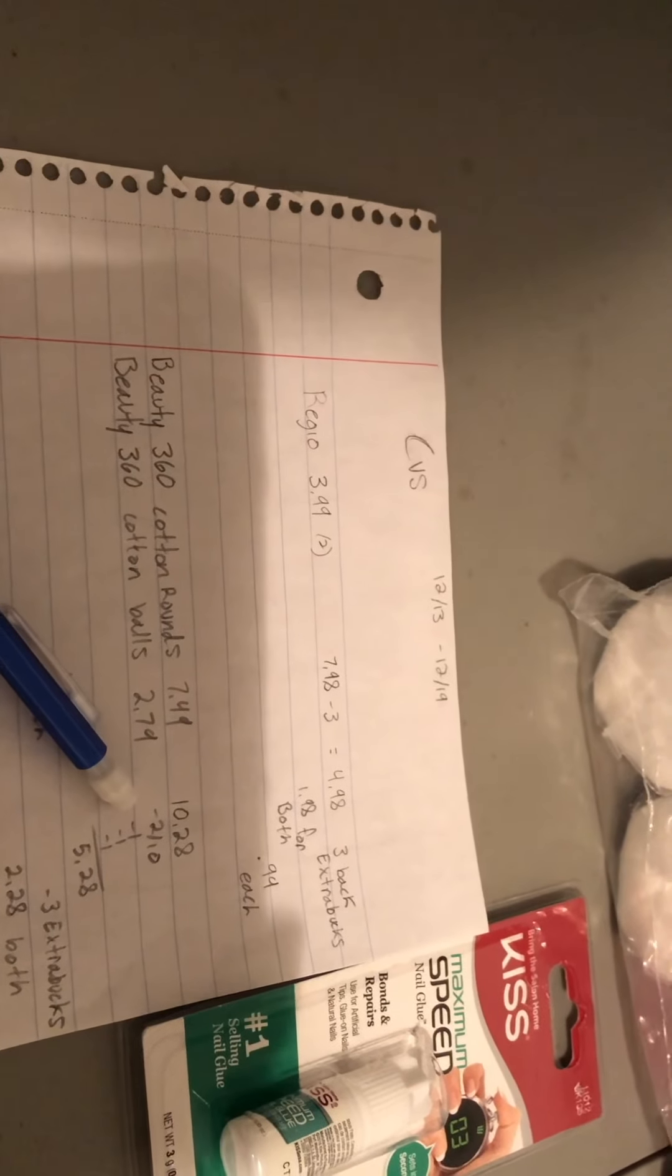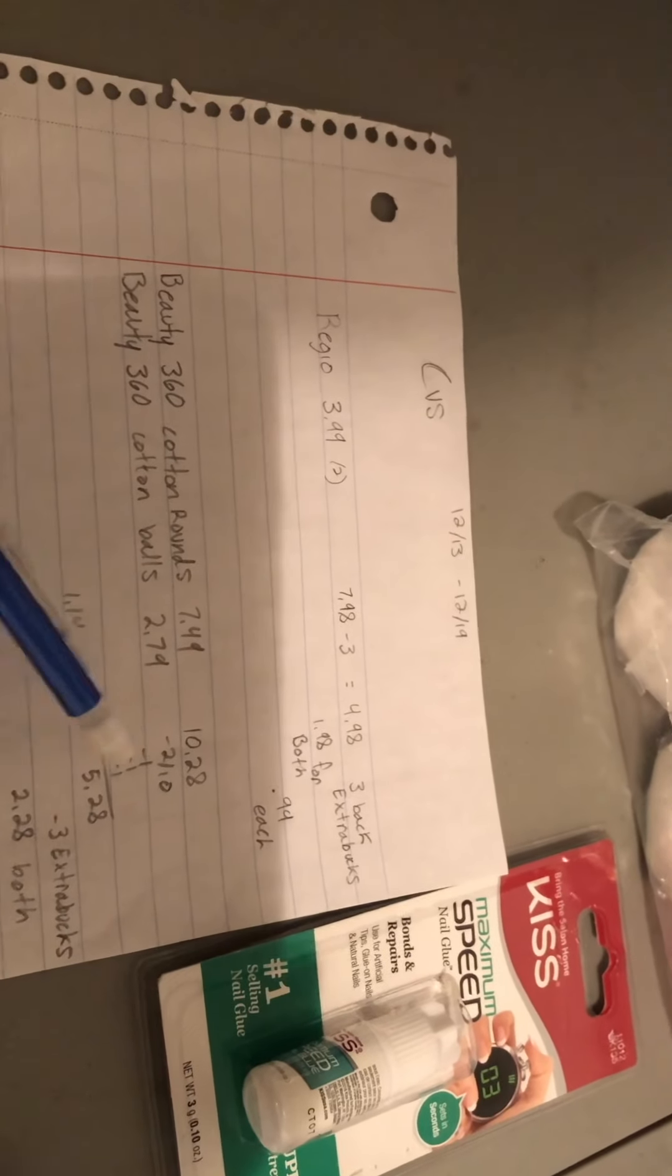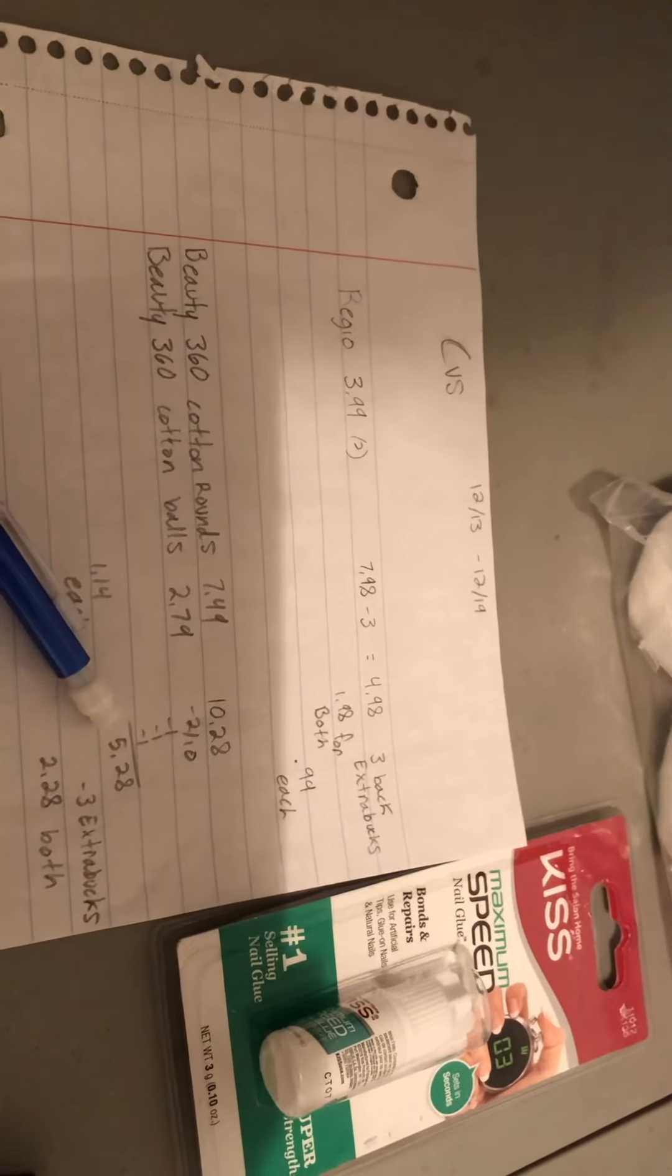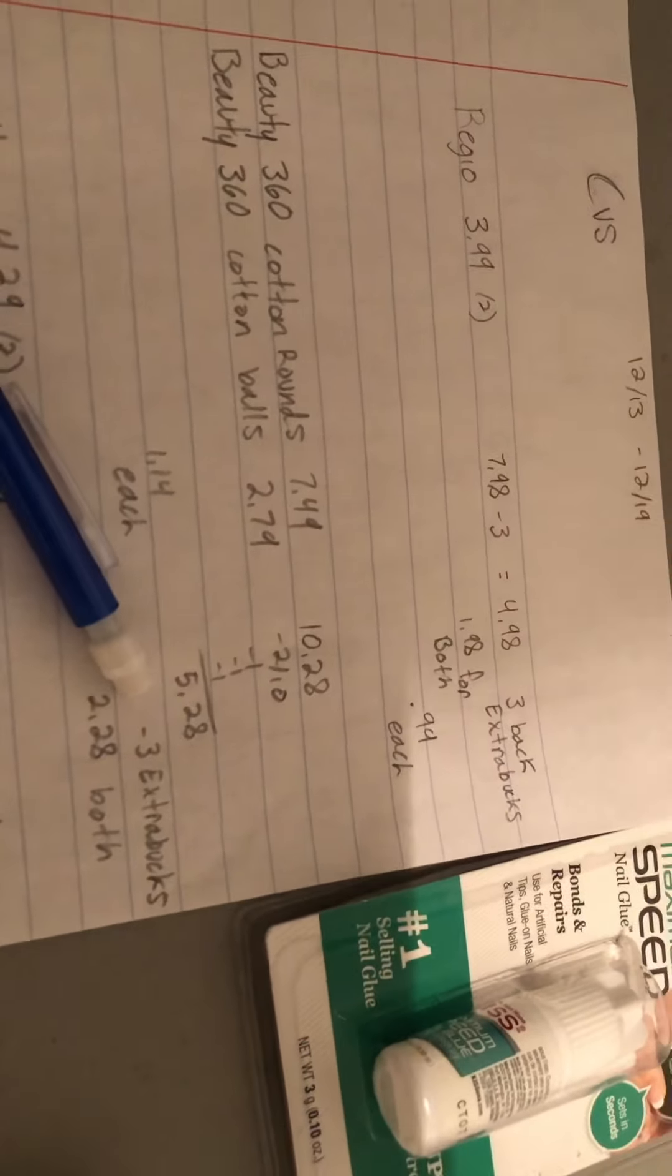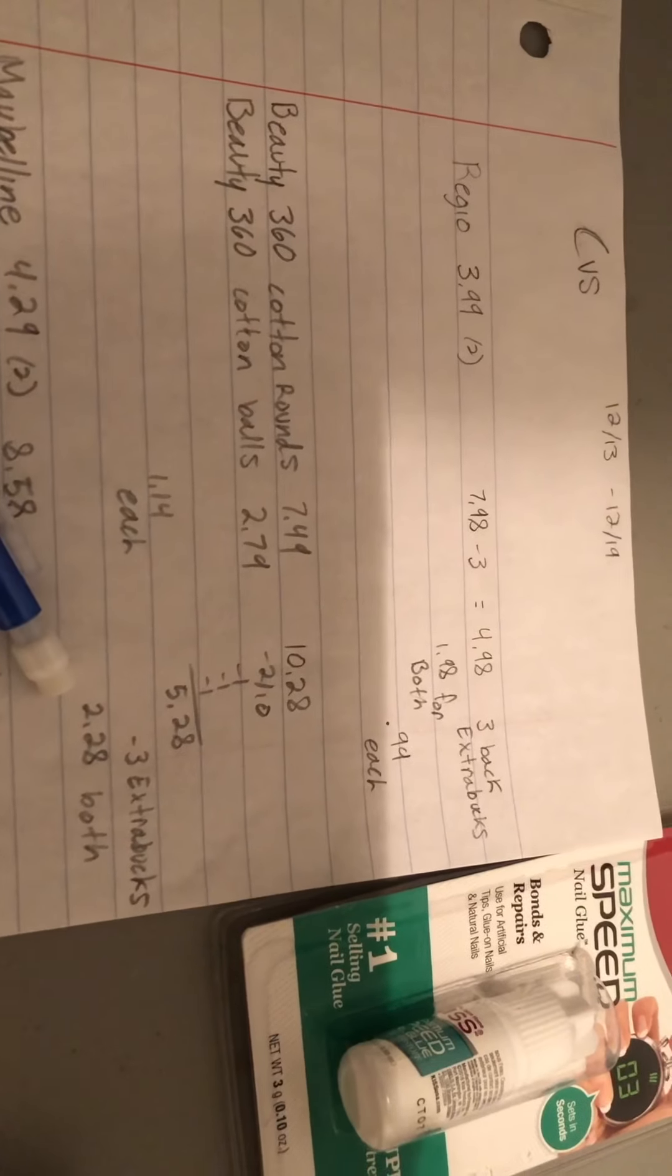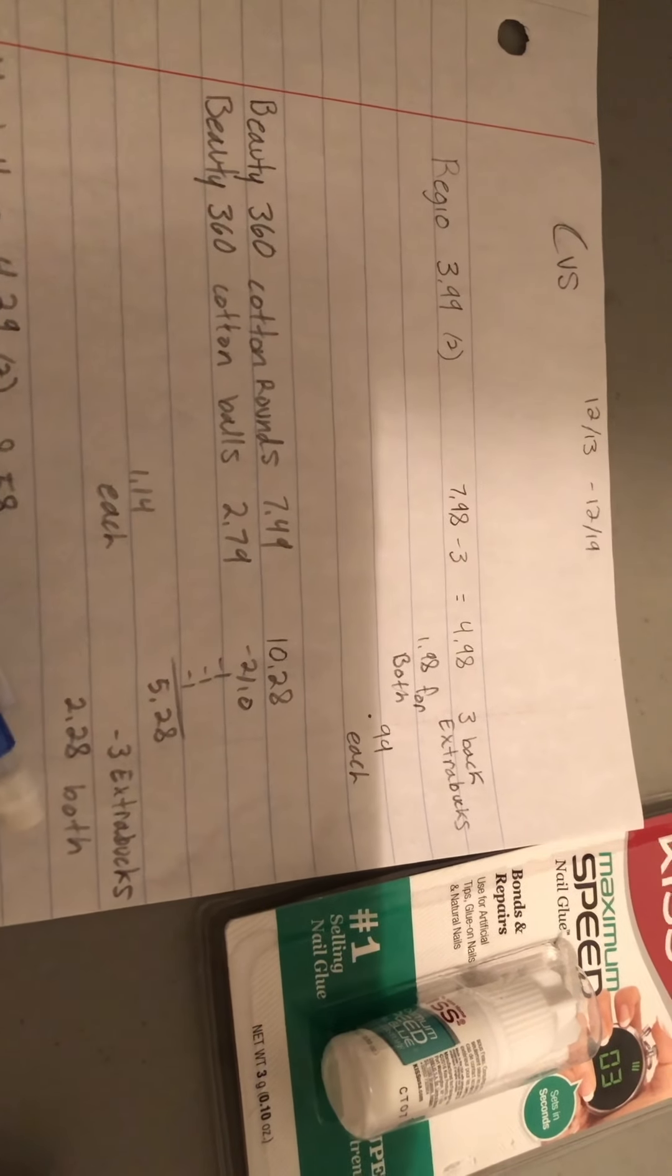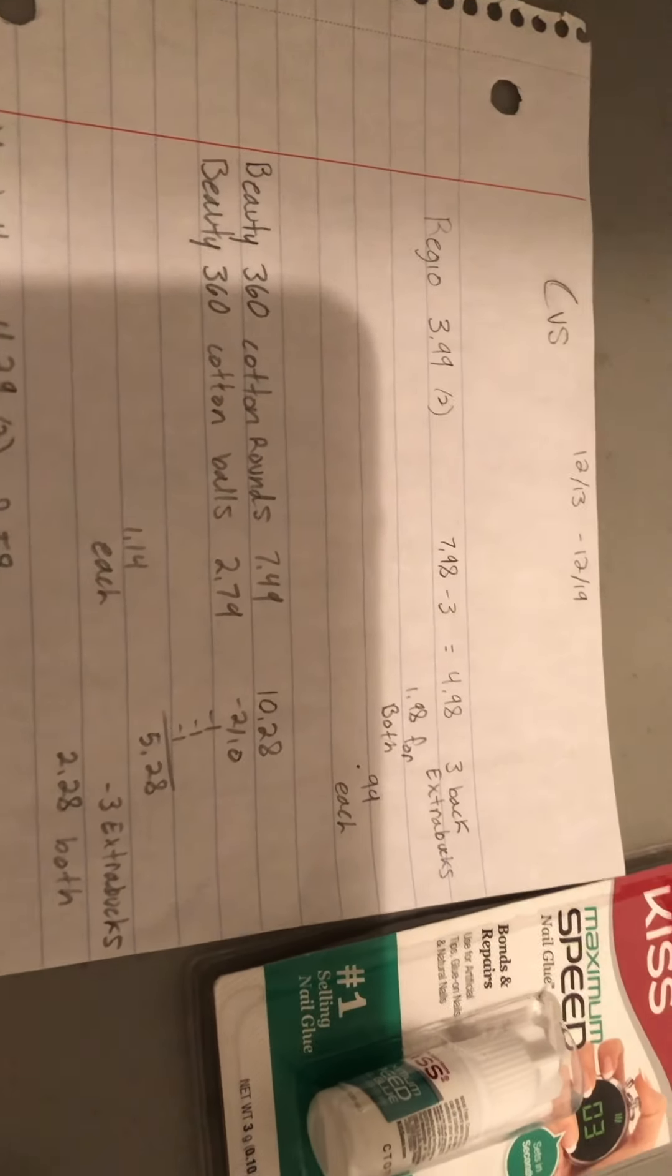I did have a $2 off of 10 and three $1 coupons which are all CVS coupons, bringing my total down to $5.28. You get a $3 extra buck for spending $10, making it $2.28 for both or $1.14 each.